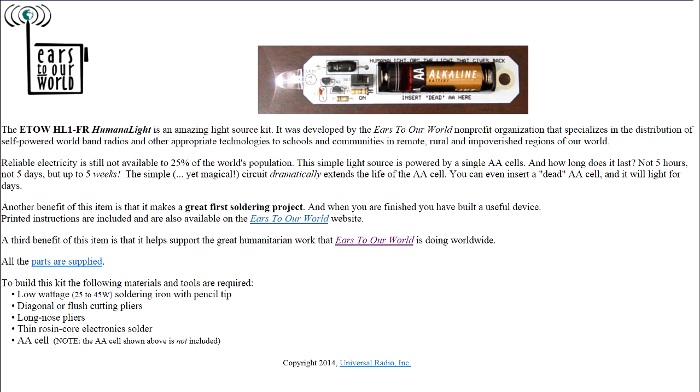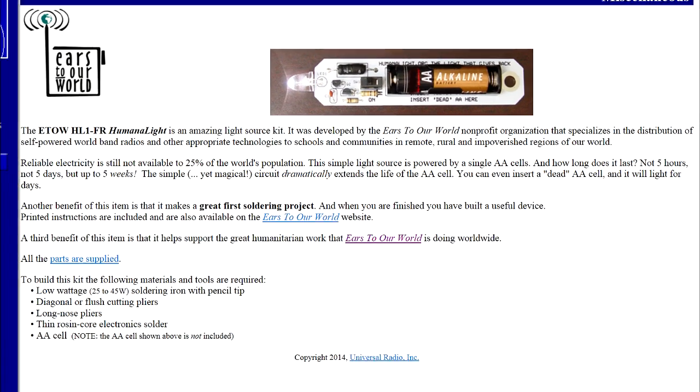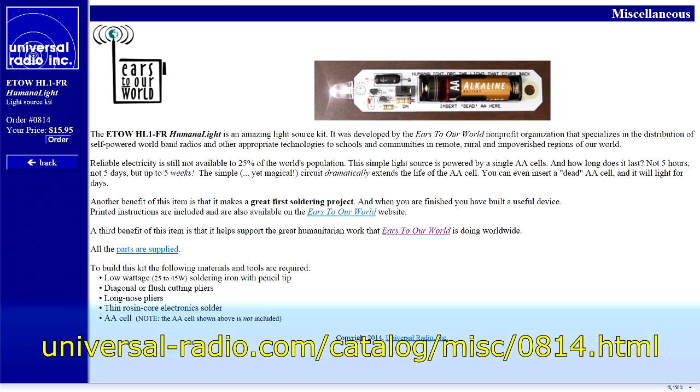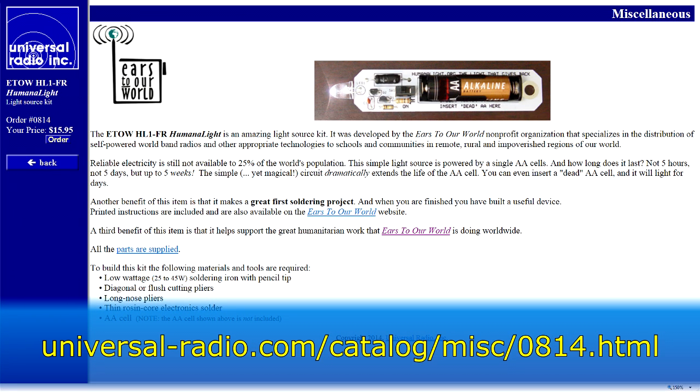There you go. The HumanoLite. A great little easy-to-do project. It would be a perfect first soldering experience. Reliable electricity is still not available to 25% of the world's population. This simple light source is powered by a simple AA cell and lasts up to five weeks. The simple, yet magical circuit dramatically extends the life of the AA cell. You can even insert a dead AA battery and it will light for days. You can find the HumanoLite at UniversalRadio.com for only $15.95.